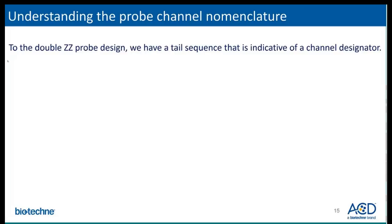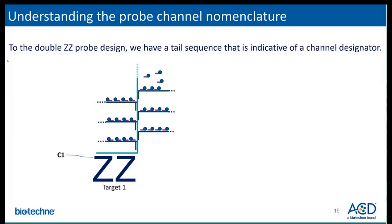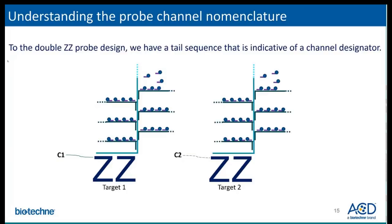In order to detect multiple mRNAs simultaneously, multiple amplification trees must be built. Specificity is ensured by adding a unique tail sequence to the probes. Through the probe design, a tail sequence is indicative of a channel designator. For example, a C1 probe has a specific C1 tail sequence that will only allow for binding of the subsequent C1 pre-amplifier, amplifier, and labeled probe molecules. Likewise, a C2 probe will have a separate and unique tail sequence.